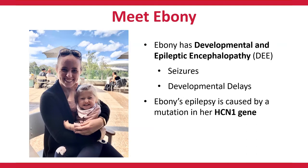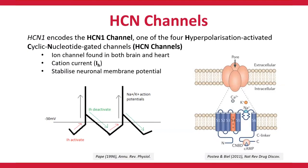In Ebony's case, her epilepsy is caused by a mutation in her HCN1 gene. HCN1 encodes the HCN1 channel, which is one of the four hyperpolarization-activated cyclic nucleotide-gated channels, or HCN channels. HCN channels are ion channels which are found on the membrane of cells in both the brain and the heart, and their structure can be seen in the image on the right-hand side of this slide.